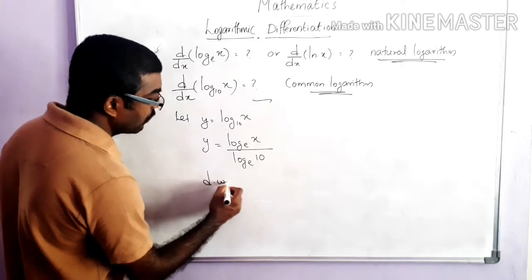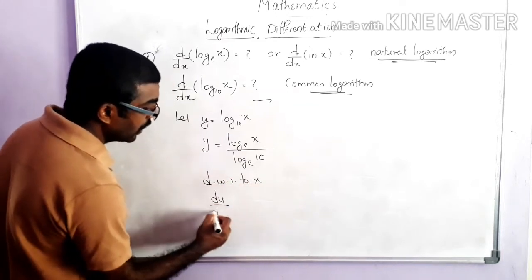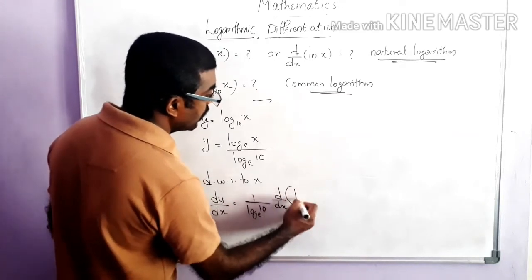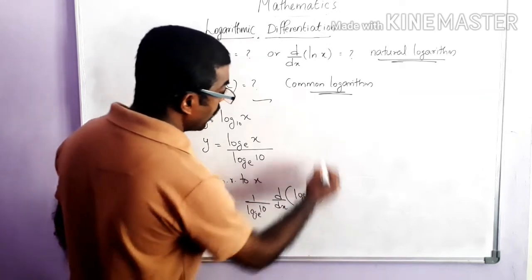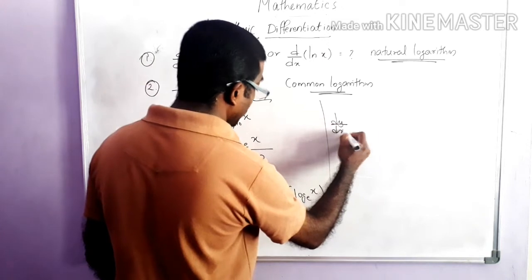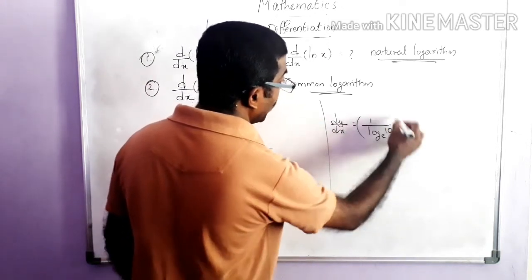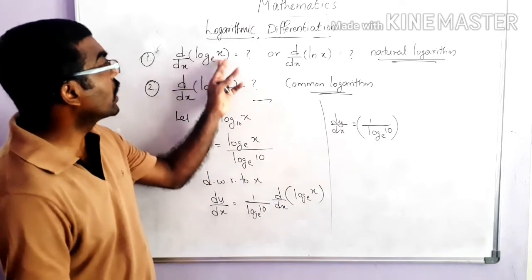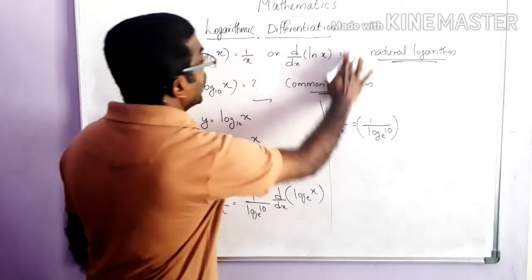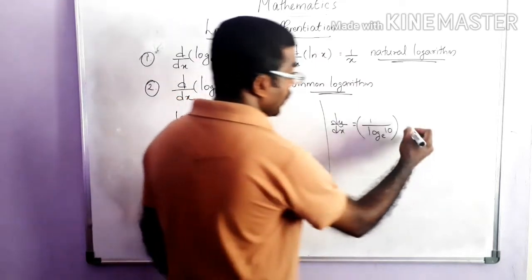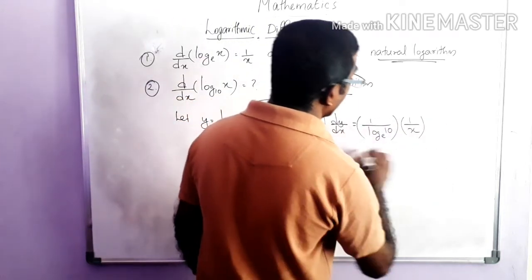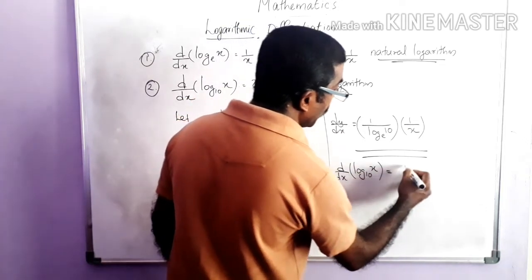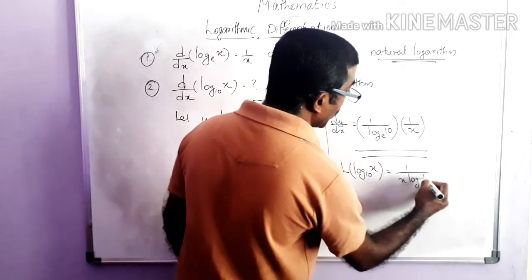Now we take the derivative, differentiating with respect to x. dy/dx equals — here 1 divided by log 10 to the base e is a constant, so we can take it out — times d/dx of log x to the base e. In the first case we proved that the derivative of log x to the base e is 1/x, so substituting: dy/dx of log x to the base 10 equals 1/x times 1 divided by log 10 to the base e.